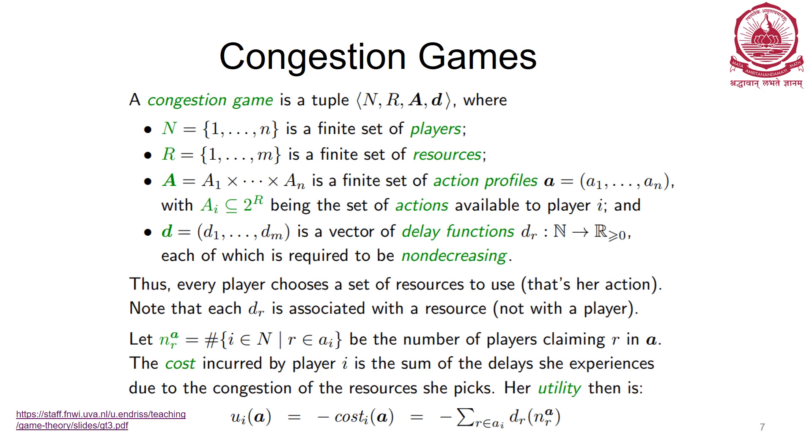Given these two motivational examples, let me formally define a congestion game. A congestion game is a tuple (N, R, A, d) where N is a finite set of players, R is a finite set of resources, A = A1 × A2 × ... × An is a finite set of action profiles. For each of them, there are 2 to the power r set of actions available, and d is a vector of delay functions, each of which is required to be non-decreasing.